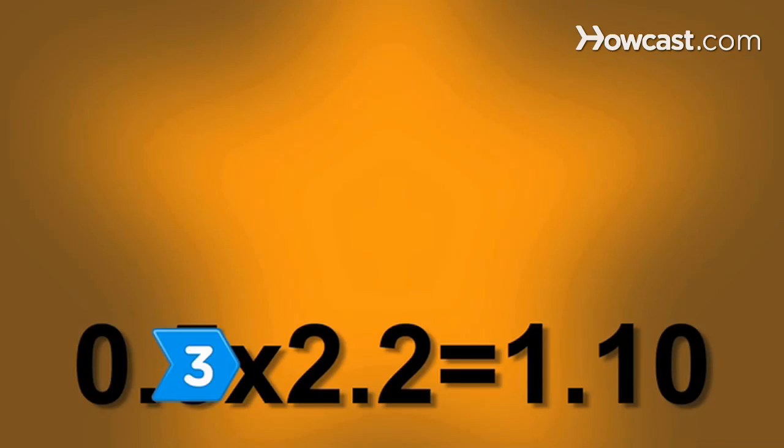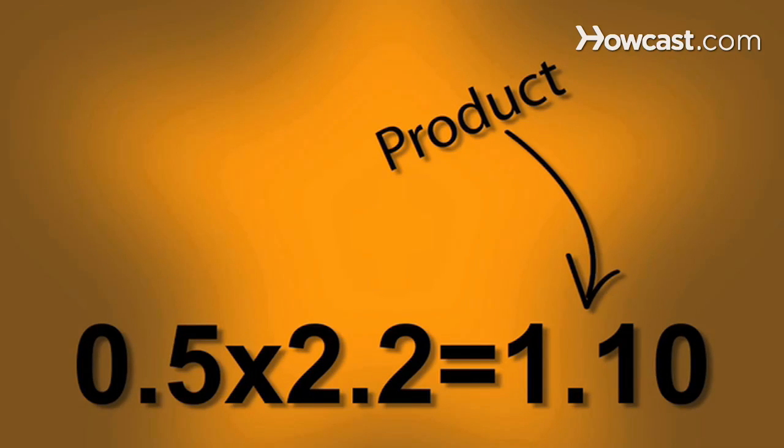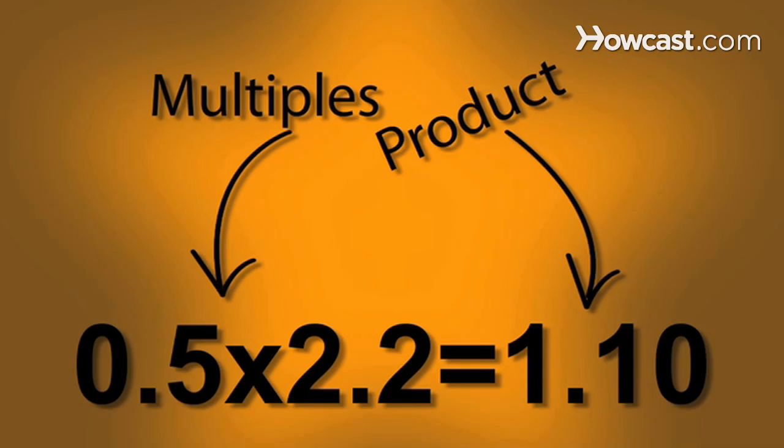Step 3. Position the decimal point in the answer, also known as the product. The product will have as many decimal places as the sum of the decimal places in the two original numbers, also called the multiples.